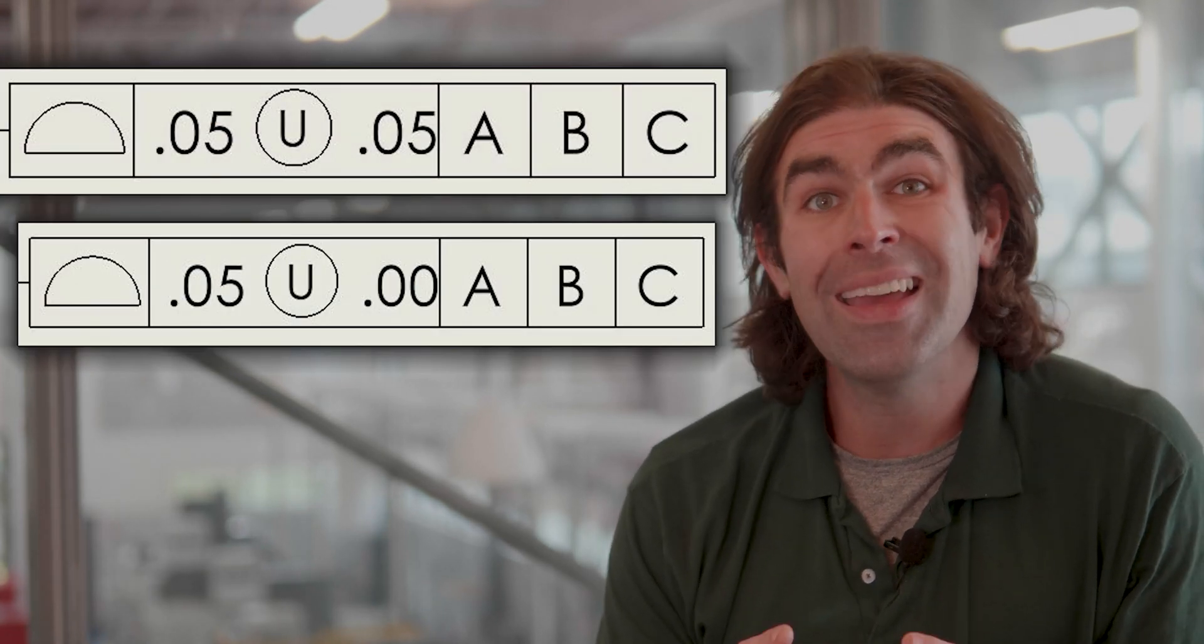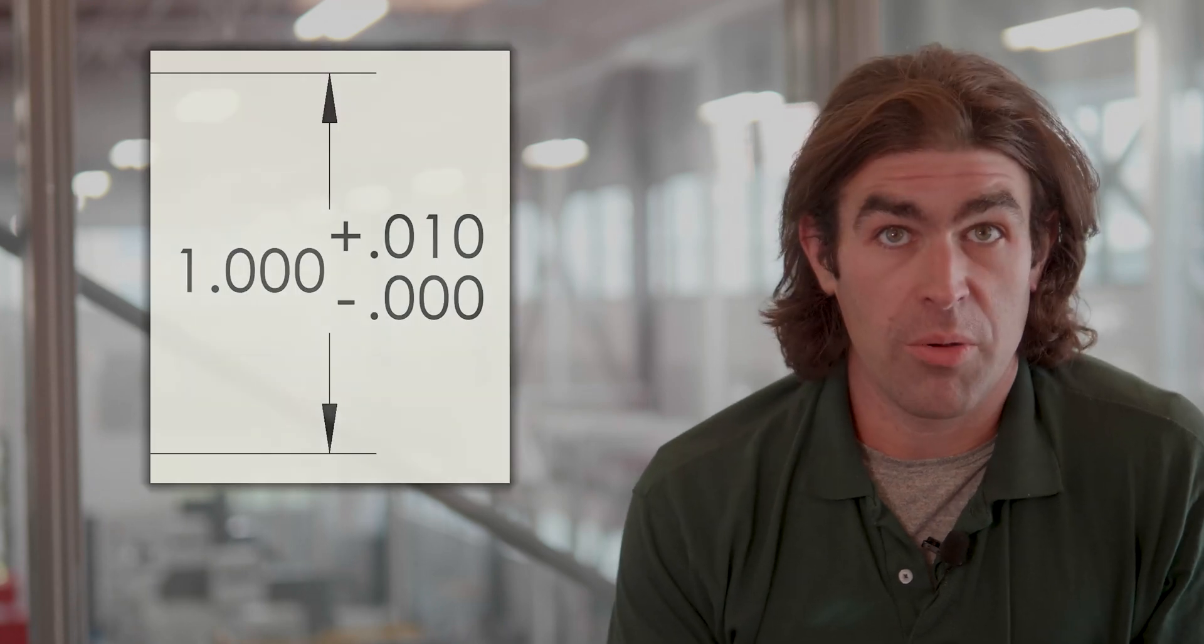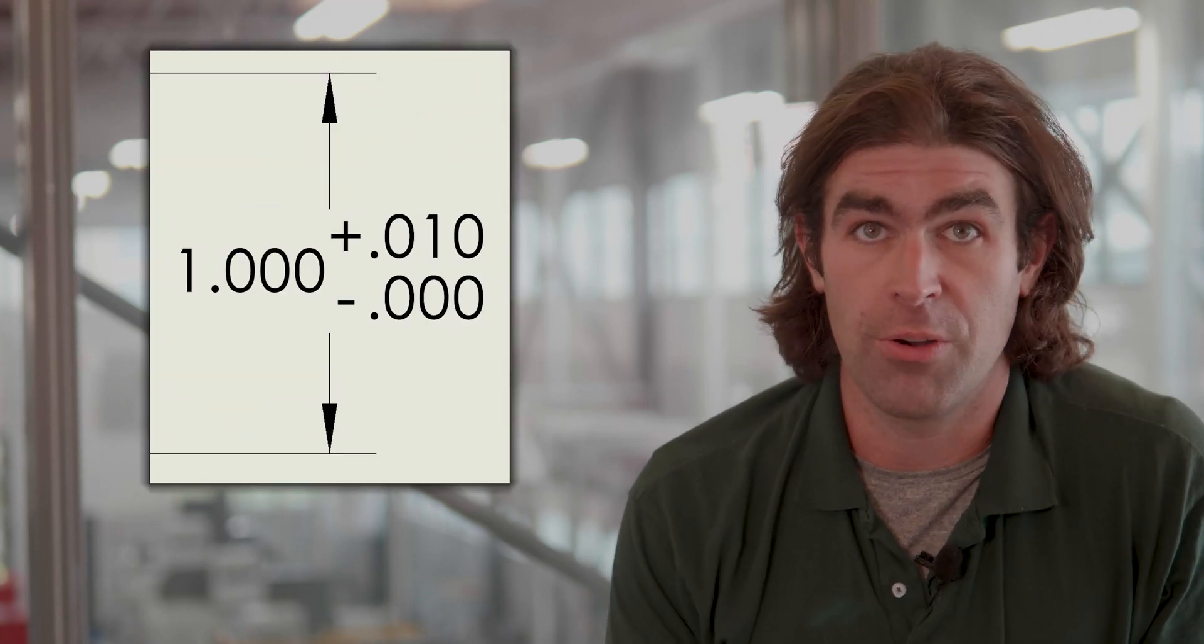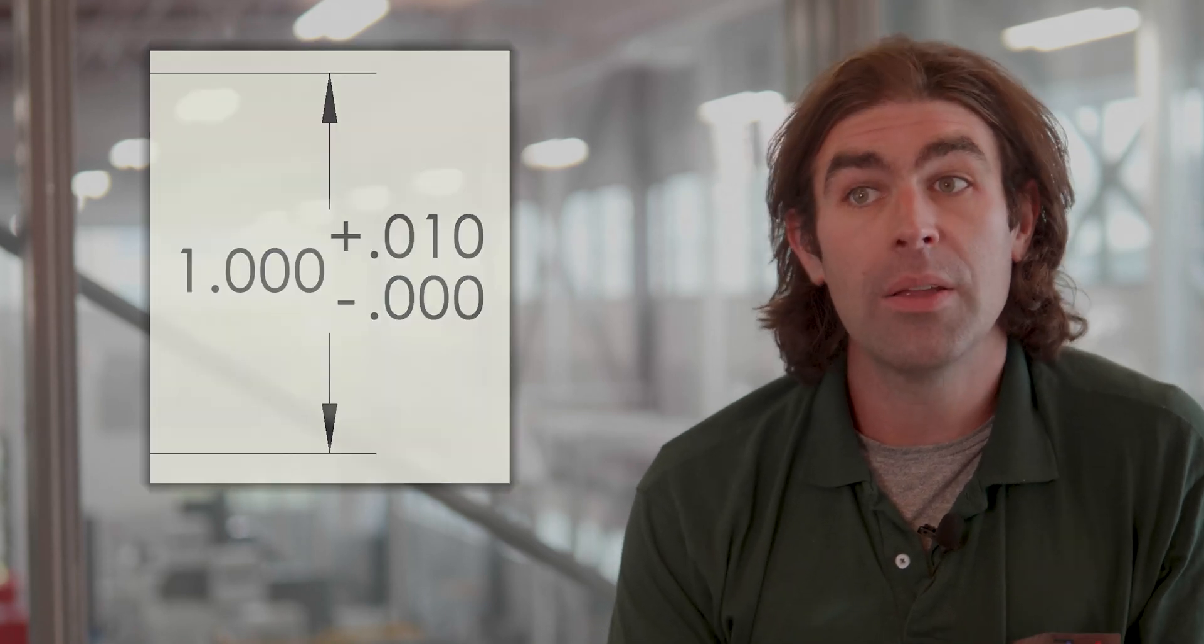The next way to apply a profile tolerance is what's known as a unilaterally disposed profile tolerance. You see these with plus or minus dimensions as well. You might have a plus or minus dimension that's one inch, plus ten thou, minus zero. You can do the same thing with profile dimensions. What this does is apply the profile in one direction only.